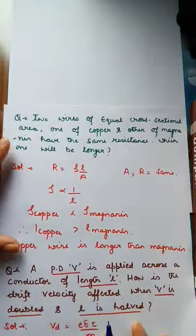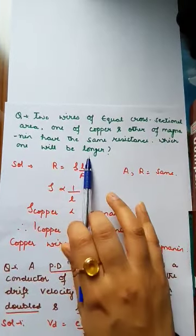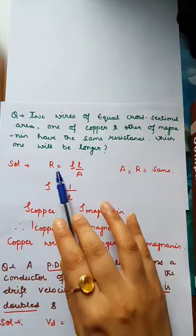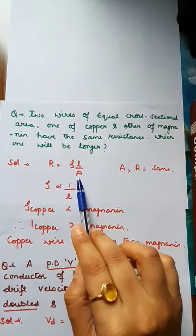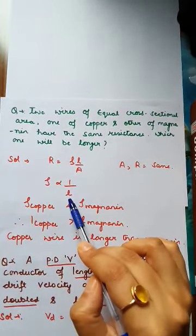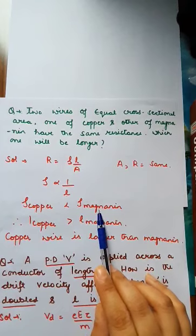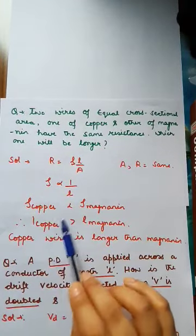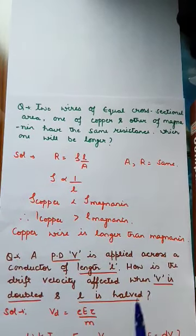Next question: two wires of equal cross-sectional area, one of copper and the other of manganin, have the same resistance. Which one will be longer? Since copper's resistivity is less than manganin's, and area and resistance are the same, the length of copper will be more compared to manganin. So copper will be longer.